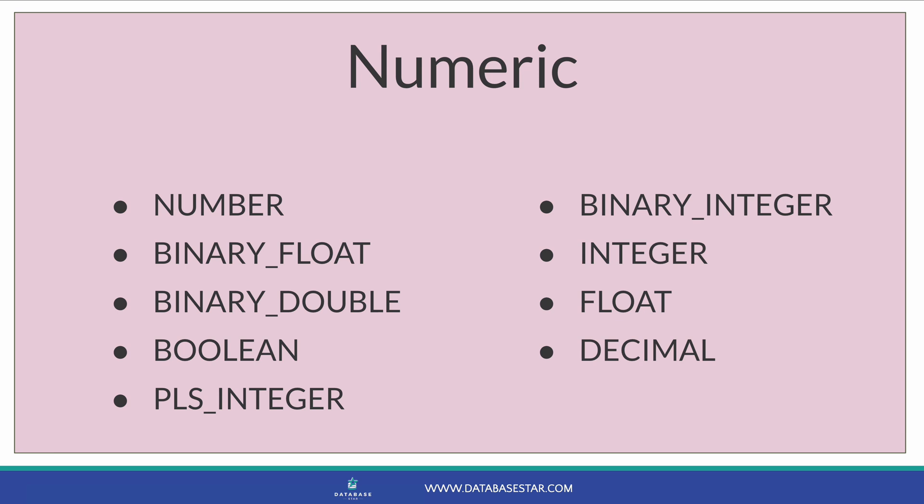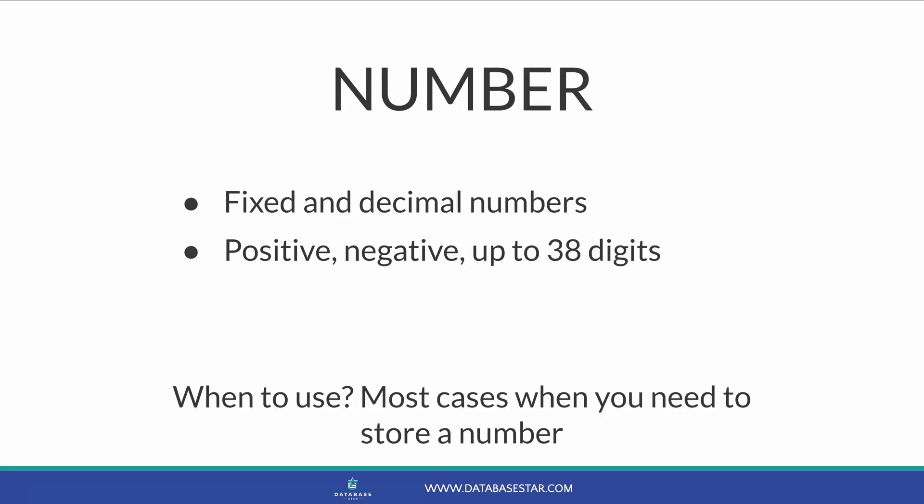Now we've covered the text data types, it's time to look at the numeric data types. The NUMBER data type is probably the most common numeric data type in Oracle. It stores whole numbers as well as decimals. You can specify the precision and the scale, which allows you to store decimals, and it stores values up to 38 digits. You should use NUMBER whenever you need to store an exact number, either whole or decimal — this should be in most cases.